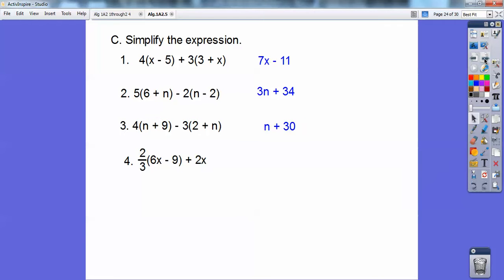So let's see. This one you're going to distribute the 2 thirds through. So it's going to be 2 thirds times 6x and then 2 thirds times 9 and then the plus 2 at the end.